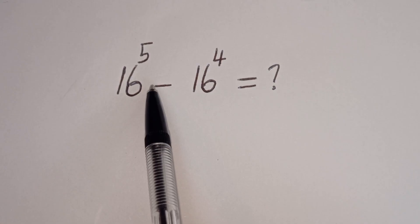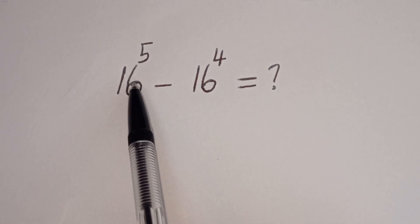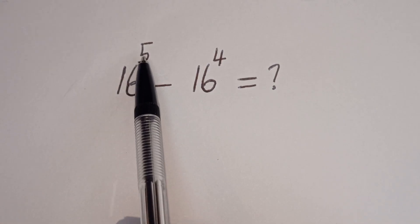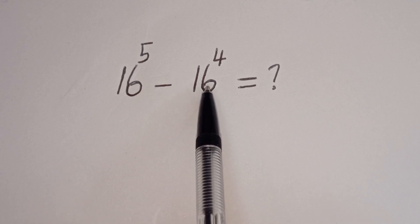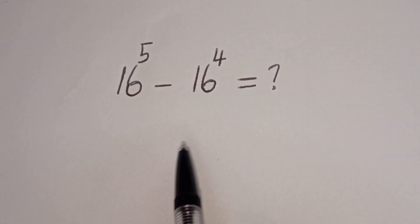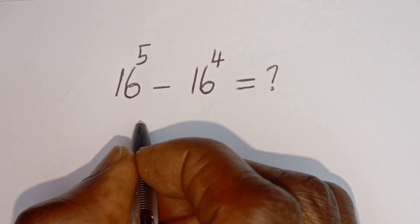Hello, how to simplify this nice math problem without using a calculator: 16 to the power of 5 minus 16 to the power of 4 is equal to what? Solution: